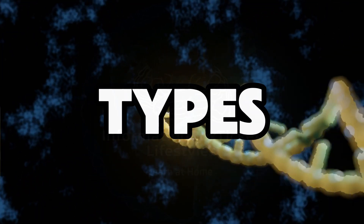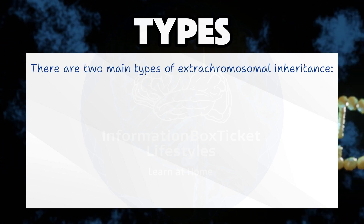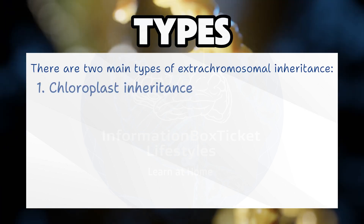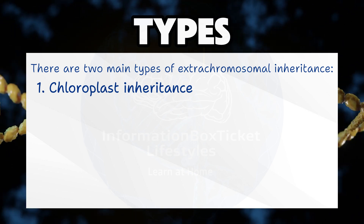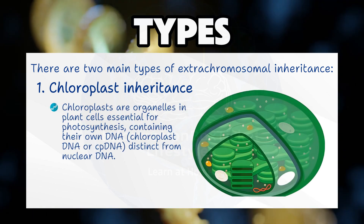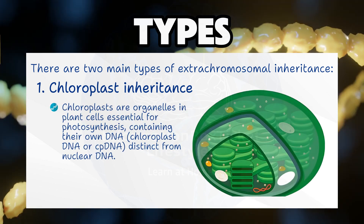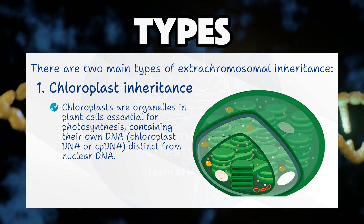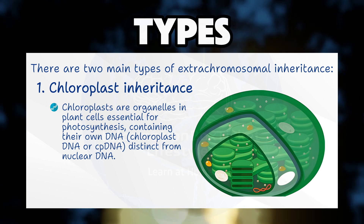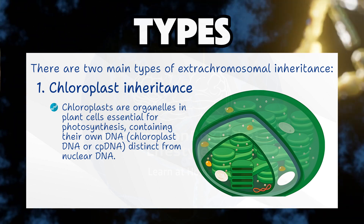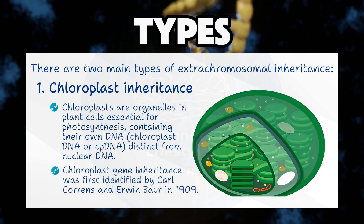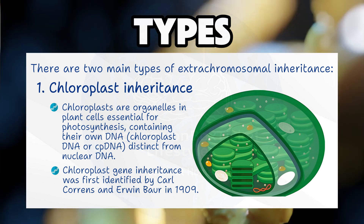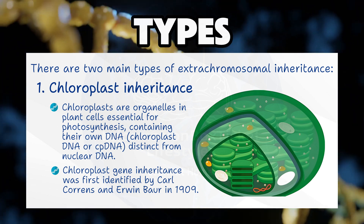Types of Extra-Chromosomal Inheritance. Type 1: Chloroplast Inheritance. Chloroplasts are organelles in plant cells essential for photosynthesis, containing their own DNA — chloroplast DNA — distinct from nuclear DNA. Chloroplast gene inheritance was first identified by Carl Korens and Erwin Bauer in 1909.